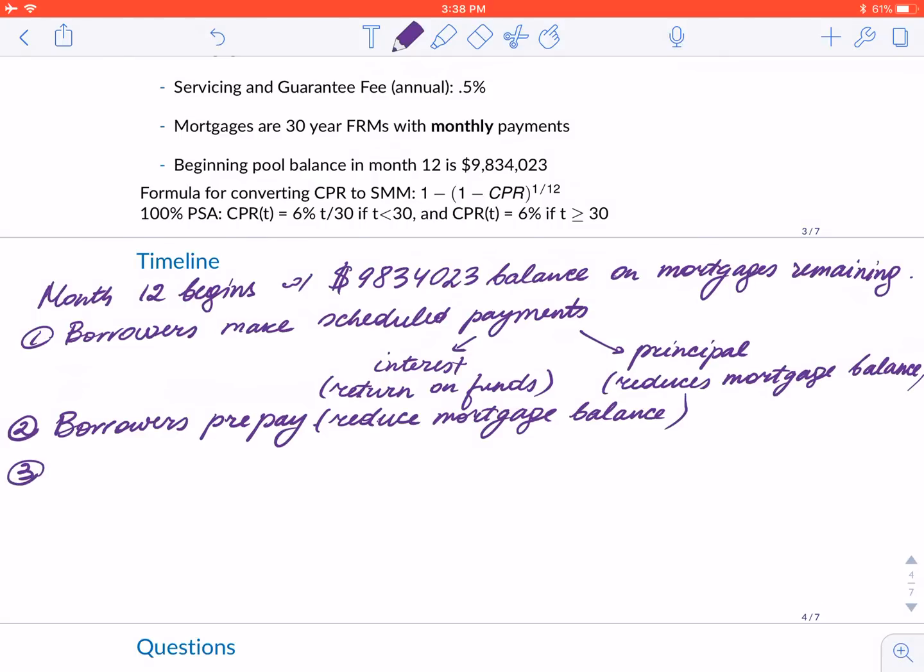The SPV or servicer collects items one and two to be passed on to investors. Investors are people who have equity stakes in the mortgage pass-through security, so they should receive all these payments. However, the servicers retain a servicing fee before they pass through all the payments.